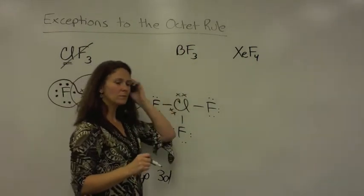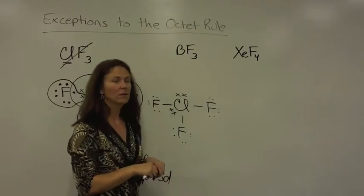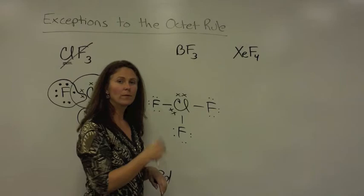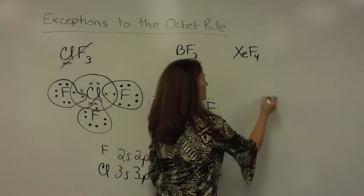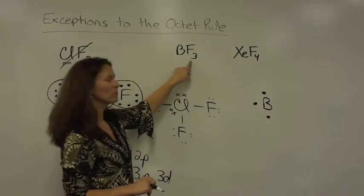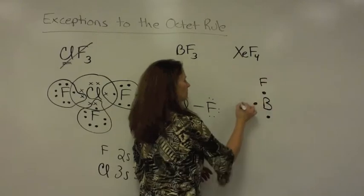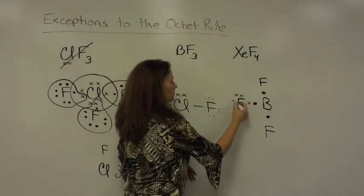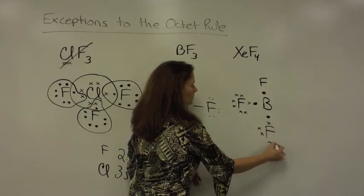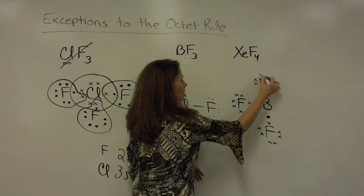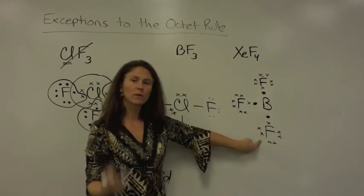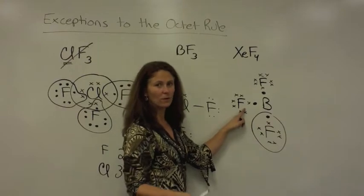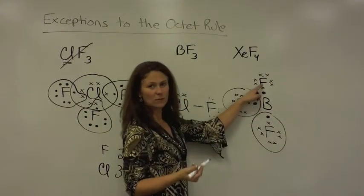BF3, boron. It's in period two, so it cannot hold more than an octet. Let's see what's going to happen and see whether or not it can hold less than an octet. Boron is in period two and it's in group 3A, so it has three valence electrons. And then I need to bond in three fluorine atoms. Each fluorine atom has seven valence electrons. Fluorine only needs to borrow one to achieve eight. Fluorine also needs to only borrow one to achieve eight. Plus, fluorine also needs to borrow one to achieve eight.